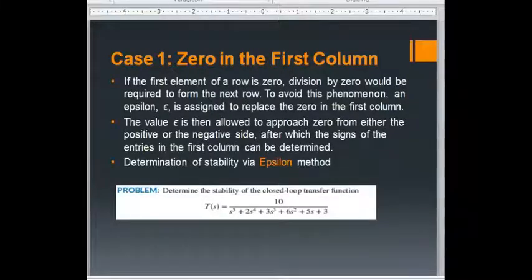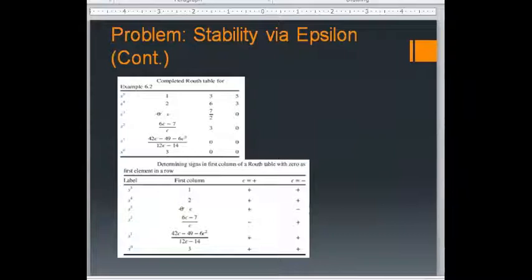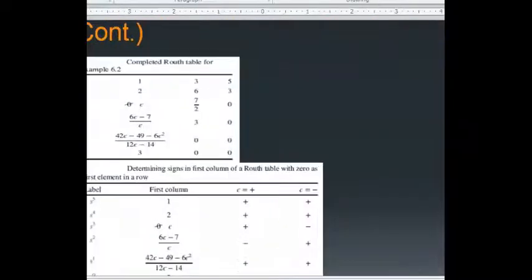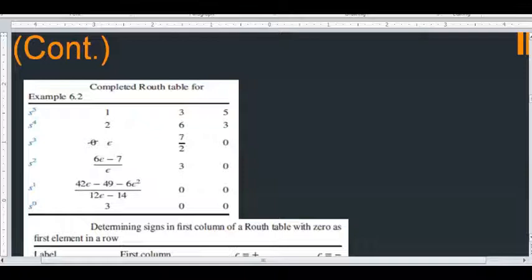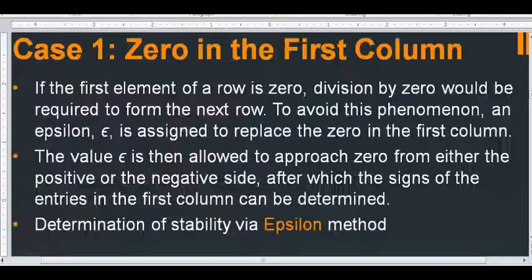Let's now consider this first case where in the first column you get a single zero. For example, let's consider this closed-loop transfer function. Let's go here and understand by this example.